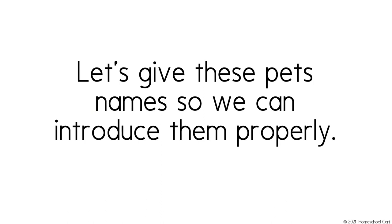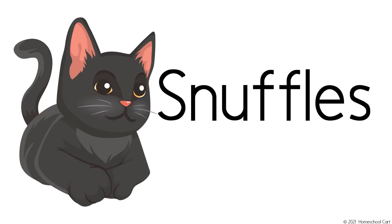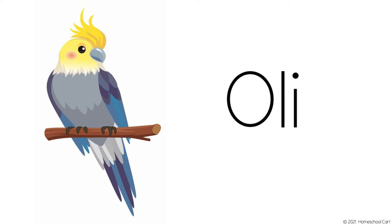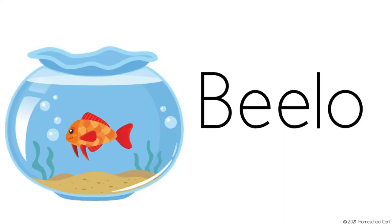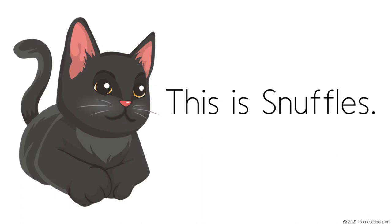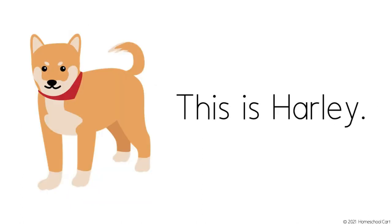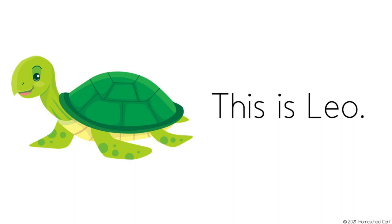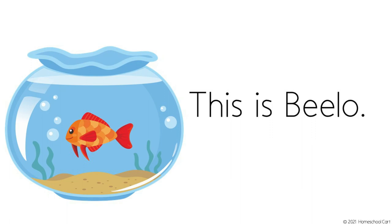Great, now let's give these pets a name so that we can introduce them properly. Now that we know the names of these pets, let's make a sentence. Listen. This is Snuffles. This is Harley. This is Ollie. This is Leo. This is Beelow. Your turn.